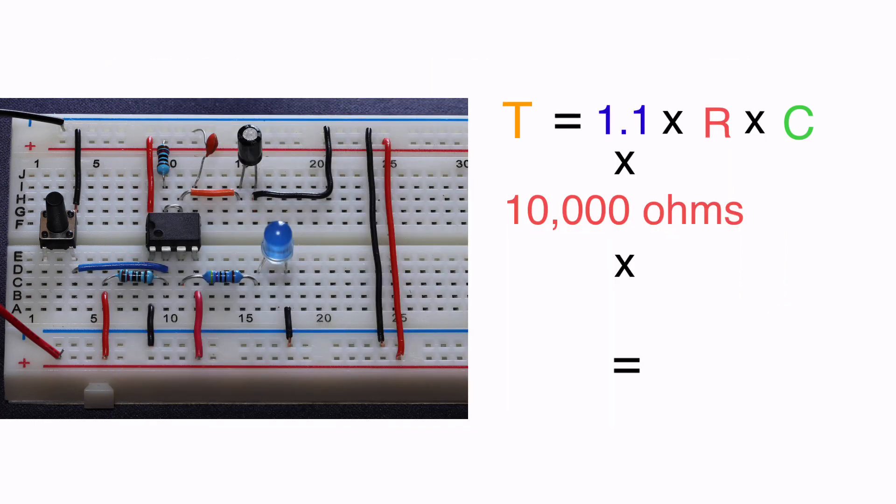Let's work through a second example. And in this case I'll leave the resistor value the same, so 10 kilo ohms. But I'll switch the electrolytic capacitor out for a 220 microfarad capacitor.